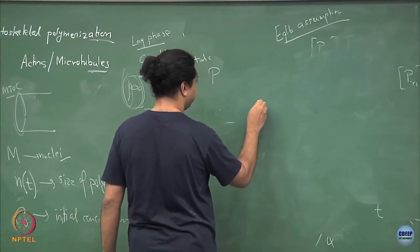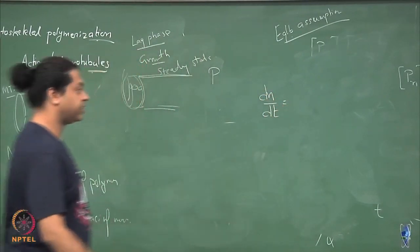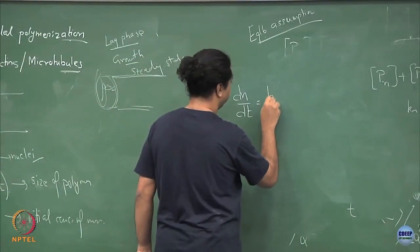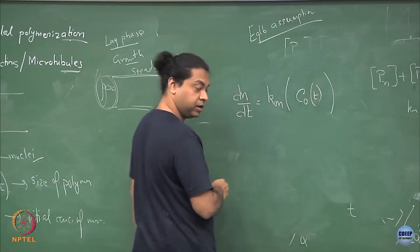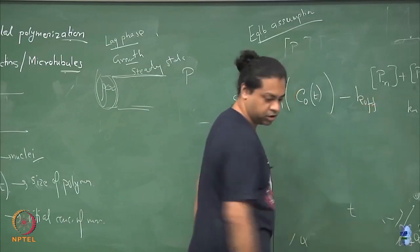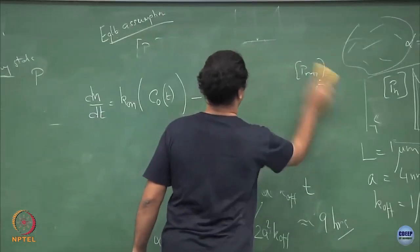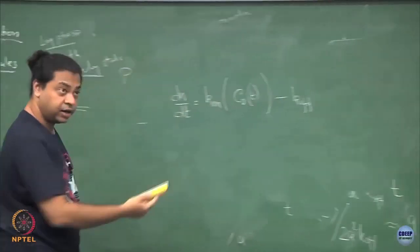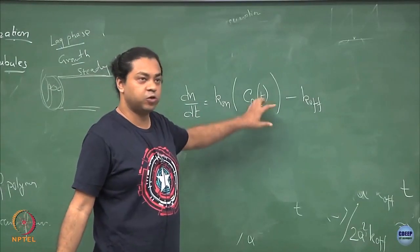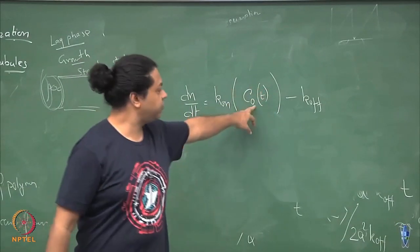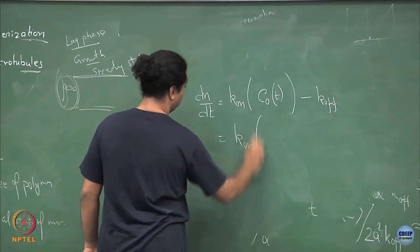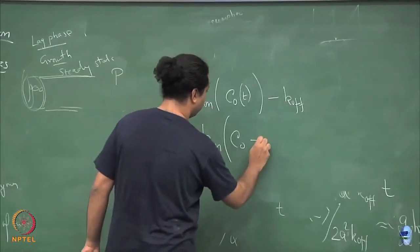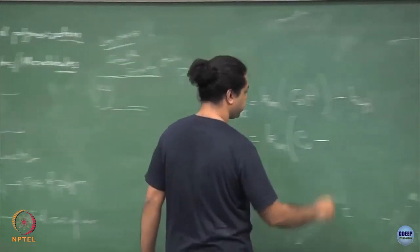I consider a system that has m nuclei from which these polymers will nucleate. The number of monomers in the filament is n(t) — the size of the polymer as a function of time. I have some initial concentration of monomers c_naught, and I no longer assume it to be constant. After time t, I have used up m times n(t) monomers across m filaments, so the monomer concentration at time t is c_naught minus m·n(t)/V.